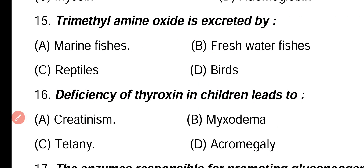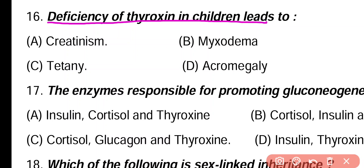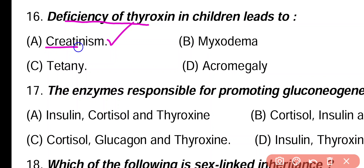Question 16. Deficiency of thyroxin in children leads to: cretinism, myxedema, tetany, acromegaly. Correct answer is option A. Due to deficiency of thyroxin, children will face cretinism disease.